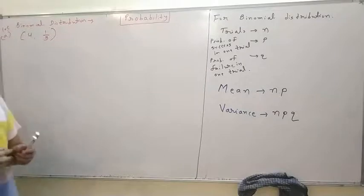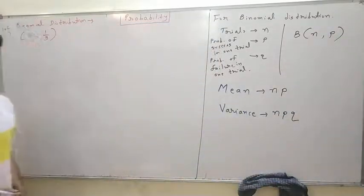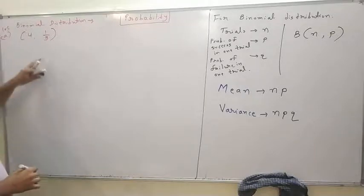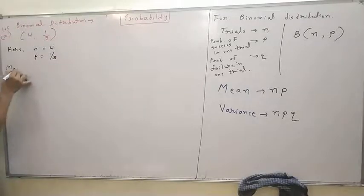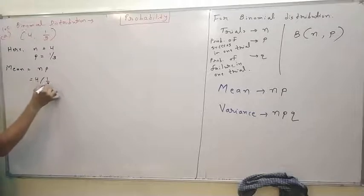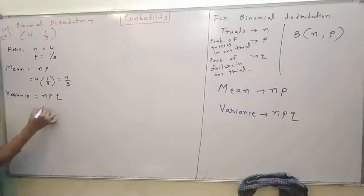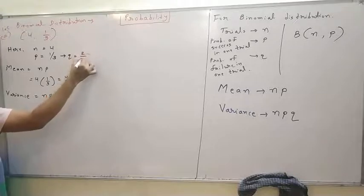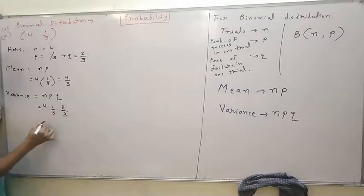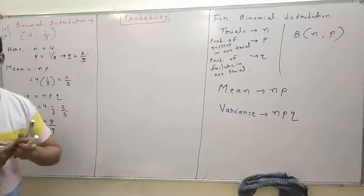In question 105, binomial distribution is given as B(4, 1/3). This takes the form n comma p, where first value is n and second is p. So here n is 4 and p is 1 by 3. Mean equals n times p equals 4 times 1 by 3 equals 4 by 3. For variance, n times p times q: q is 1 minus 1/3 equals 2 by 3, so variance is 4 times (1/3) times (2/3) equals 8 by 9. Mean is 4 by 3 and variance is 8 by 9.